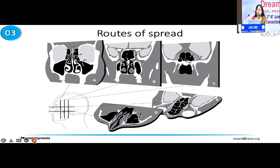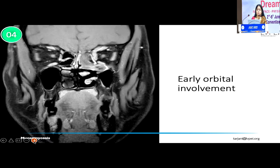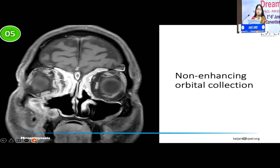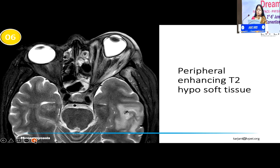This schematic shows that the orbit can get involved through several routes — one of which is the pterygopalatine fossa, often missed by many clinicians. In mucor with early orbital involvement, you may just see a little thickening of the muscles on the affected side compared to the other, which may slowly progress to a localized abscess. Remember: hyperintense border with hypointense inside is classic of an abscess. This is an early abscess in the medial orbital compartment. When you have advanced disease, you can have the entire orbit as a bag full of pus, with hyperintense border, hypointensity inside, and tenting of the globe — the guitar pick sign.